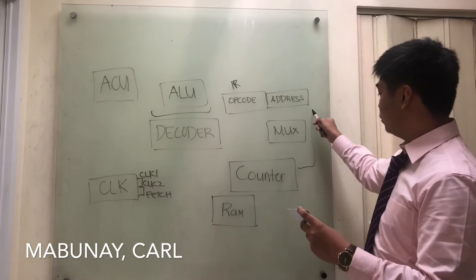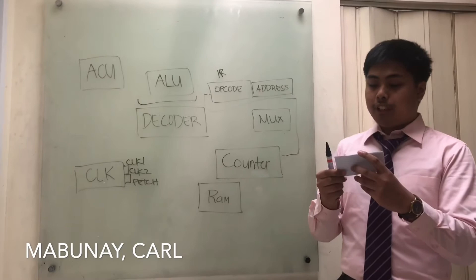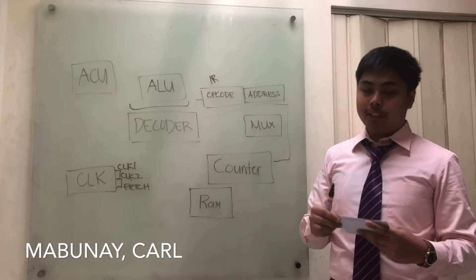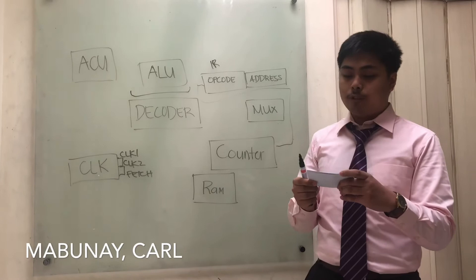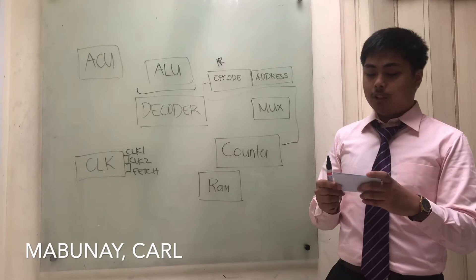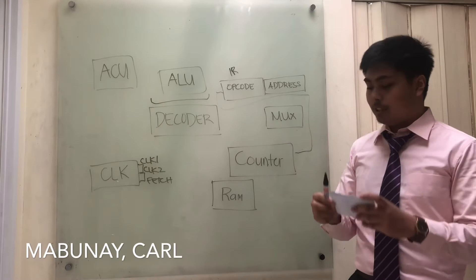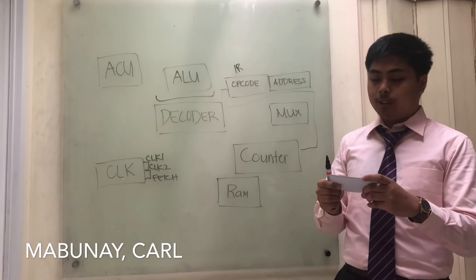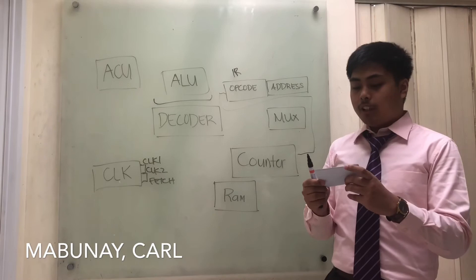The instruction register has two fields in two different formats: opcode with data operand, and opcode with address of data operand. In the first case, the opcode is given to the ALU and decoder for decoding, and a series of micro-operations are generated. The data operand is loaded onto the data bus and transferred to the ALU for its respective micro-operations as specified by its opcode. In the second case, the address of the data operand is loaded onto the address bus and a memory cycle is initiated. The memory location specified by the address lines is read, and the data is transferred onto the data bus and given to the ALU to undergo the operations specified by its opcode.